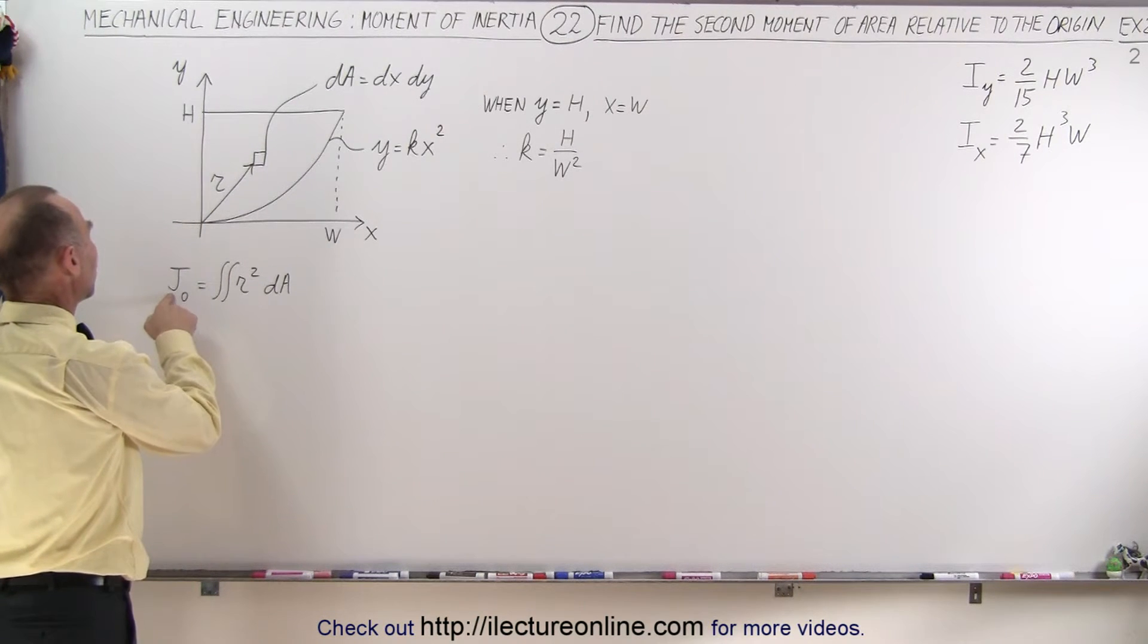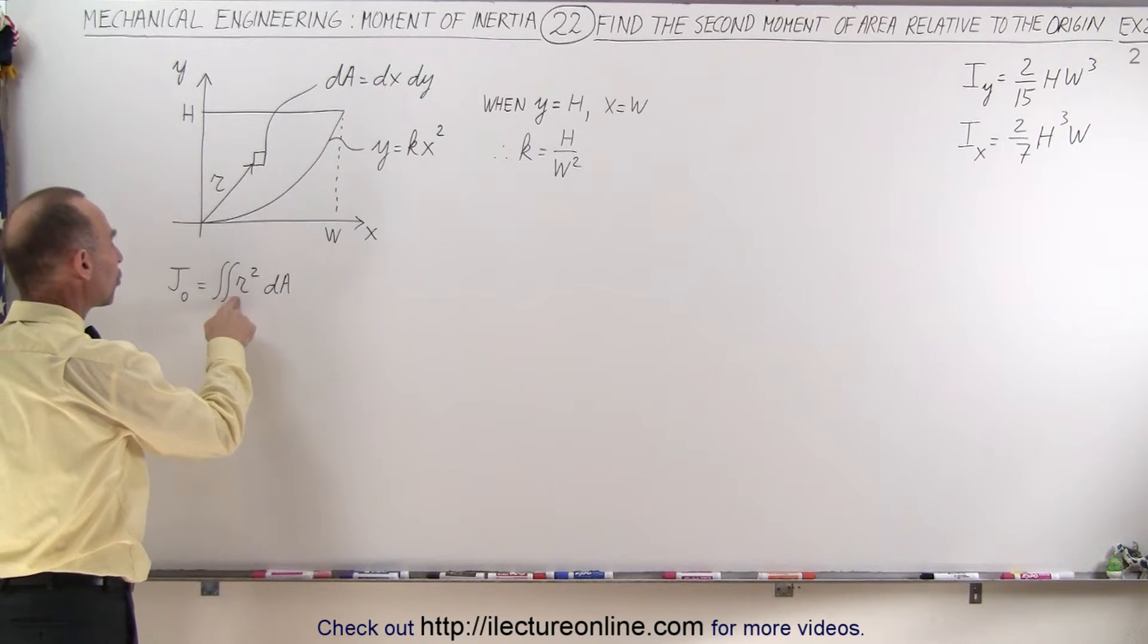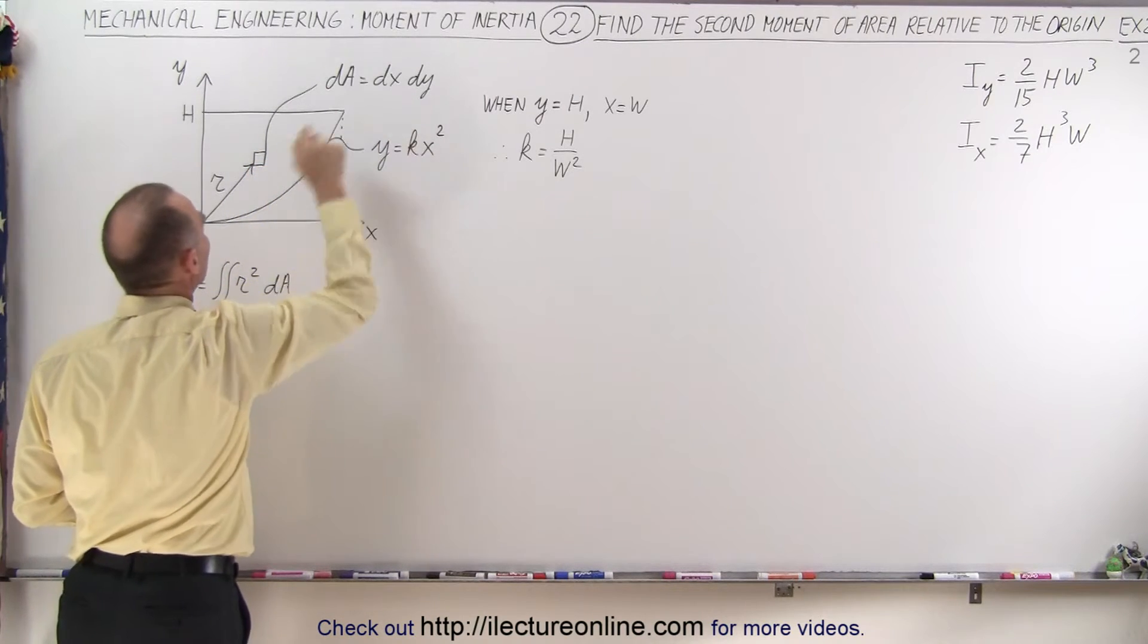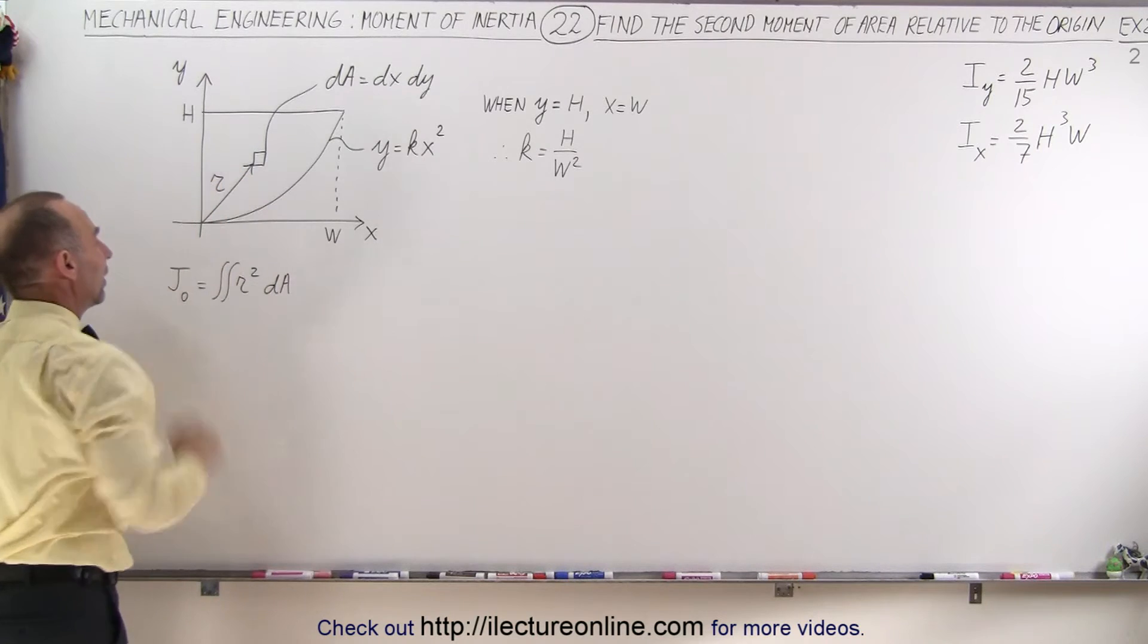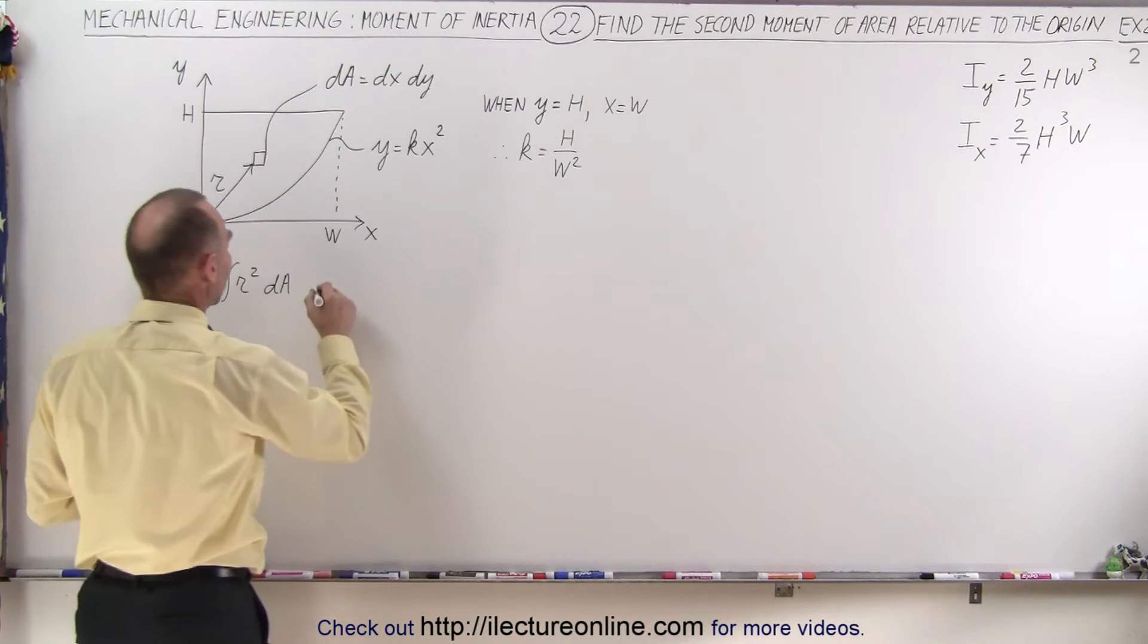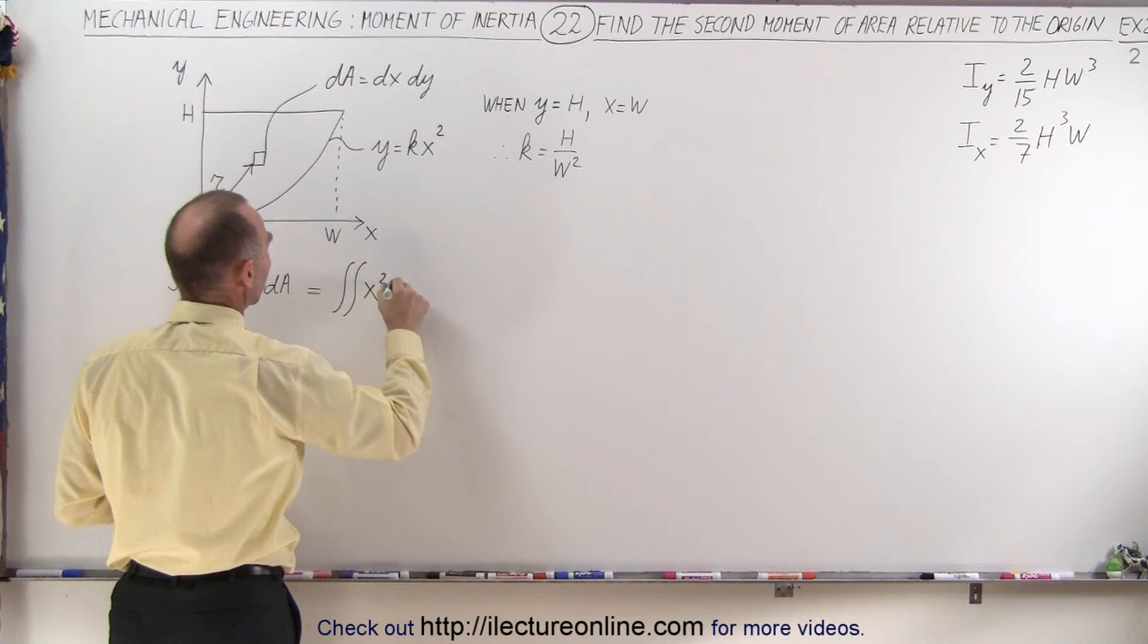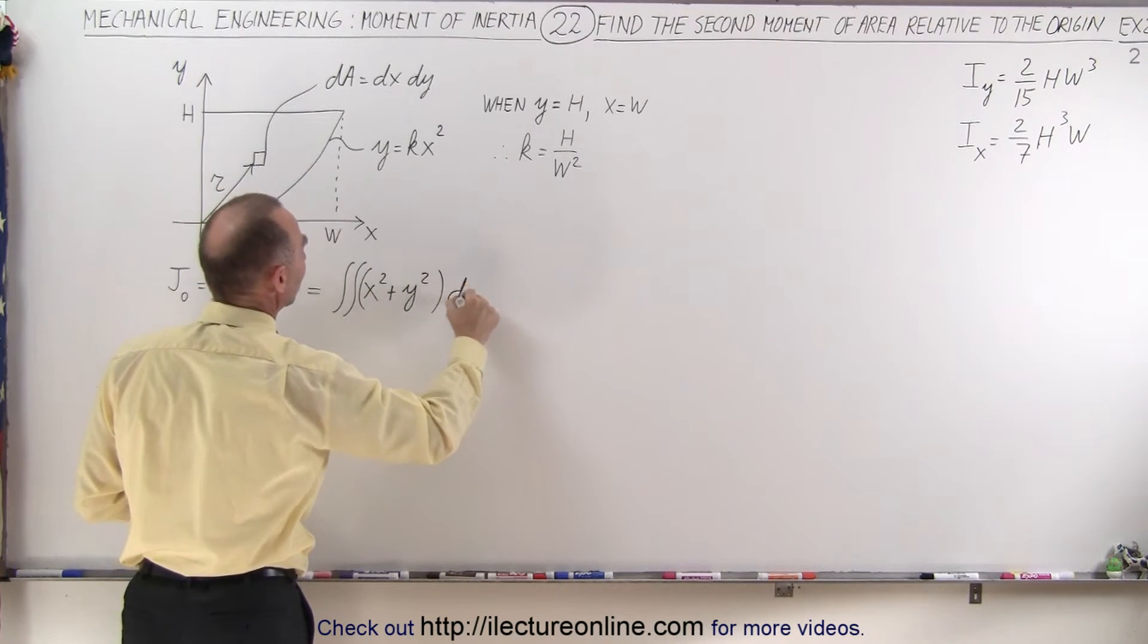And this is going to be the equation. The second moment of area relative to the origin is equal to the double integral of r-squared dA. dA is our little area element, which is dx times dy, and r here is the distance from the origin to our area element. Now, we can convert that r-squared into Cartesian coordinates, so this can be written as a double integral of x-squared plus y-squared, instead of r-squared, times dA.